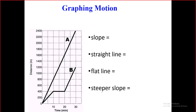The last point: a steeper slope means a higher speed. Line A is steeper than line B, so A is faster than B.